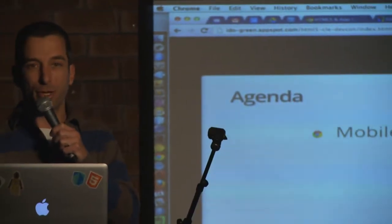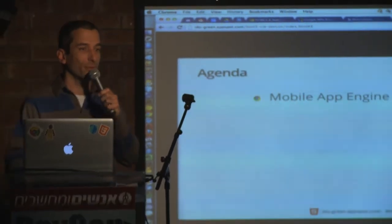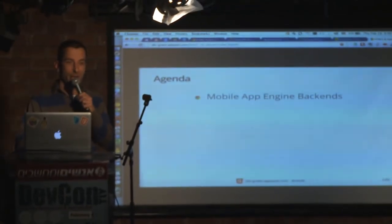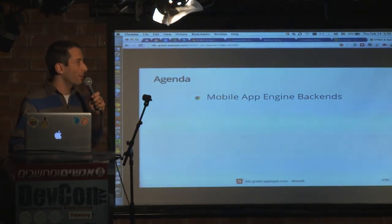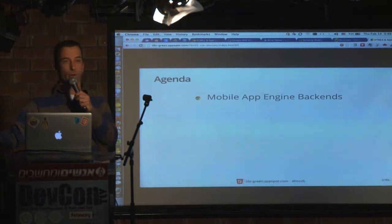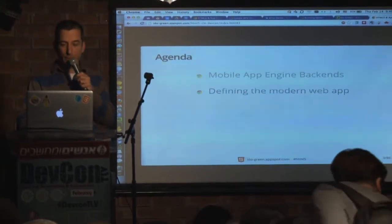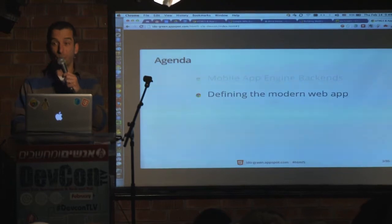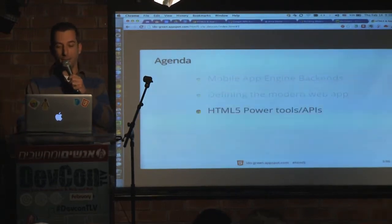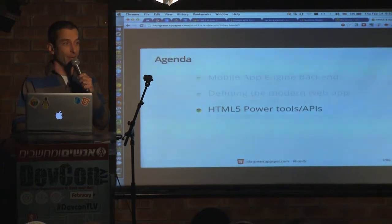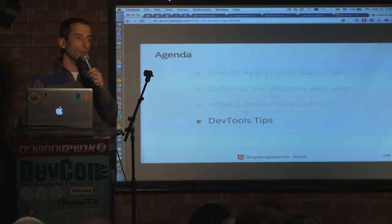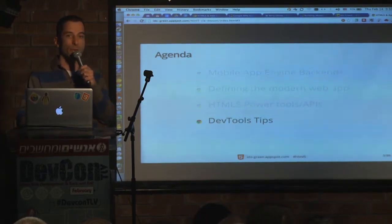Let's jump. In the next 30 minutes I'll try to go over the slides quickly for 25 minutes and leave room for questions. We'll speak about mobile App Engine backends and how you could improve your life when defining a new API to consume from any mobile device — iOS, Android, the web, anything. Then we'll define what a modern web app is, cover some power tools and APIs, and if we have time I'll show you some cool DevTools things for multi-screen testing.